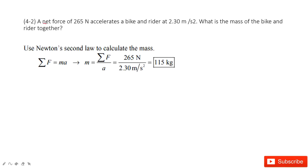You can see the net force is given, the acceleration is given, and you need to find the mass. So we look at the Newton's second law equation: net force equals mass times acceleration. Force is given, acceleration is given. So it's super easy to get the mass — it's the net force divided by acceleration.